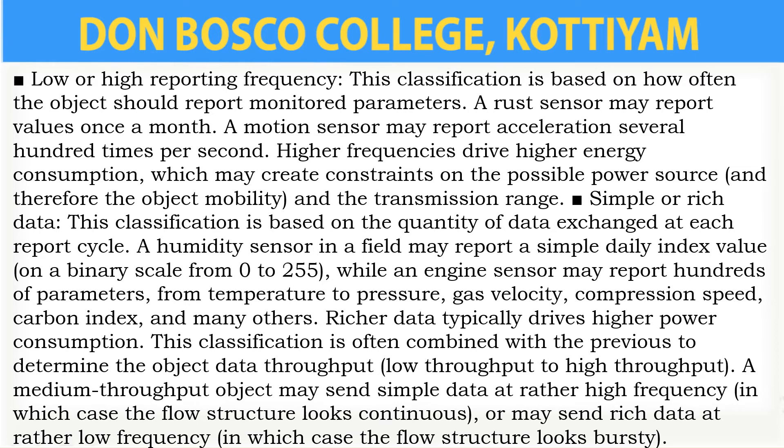The third classification is based on low or high reporting frequency. This classification is primarily based on how regularly the object must report monitored parameters. A rust sensor may also report values as infrequently as once a month, whereas a motion sensor can also report acceleration at various hundred instances per second. Higher frequencies force greater energy consumption, which can create a constraint on the feasible power supply and the transmission range.